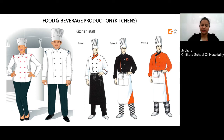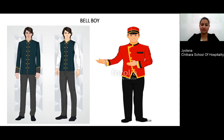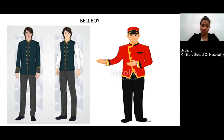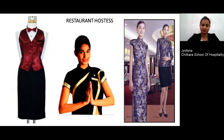Different color combinations and designs are also possible, as visible in the image. For the trouser, a black trouser or a black-and-white check can be chosen. This can be the same for male and female. The next department is bellboy, who escorts guests and helps with luggage handling from the lobby to rooms or vice versa. For the bellboy, a full one-piece jacket with a Chinese collar and a trouser with comfortable shoes can be given, with different design and button patterns.